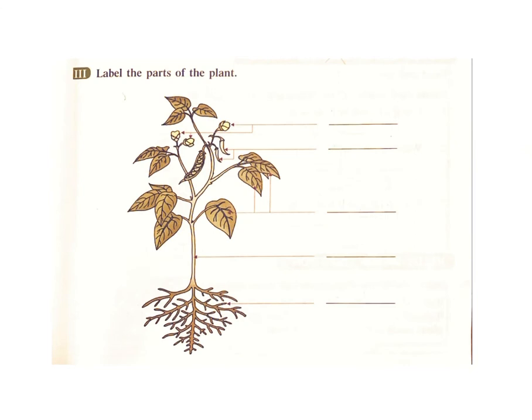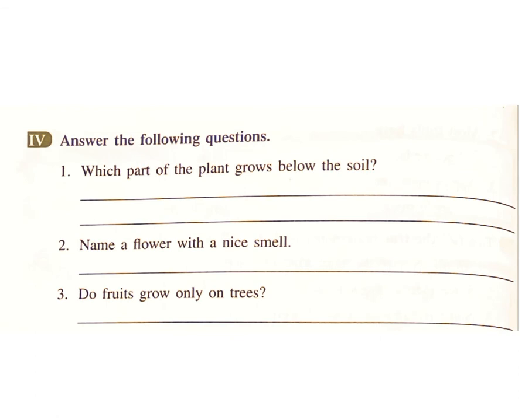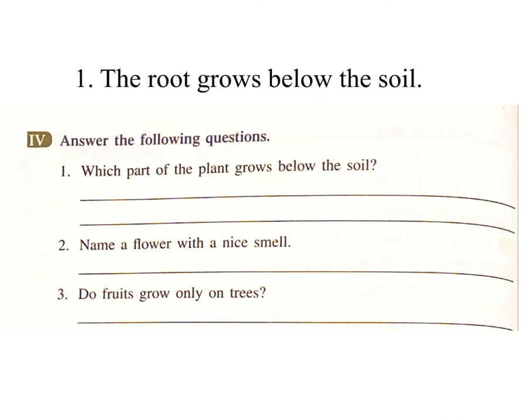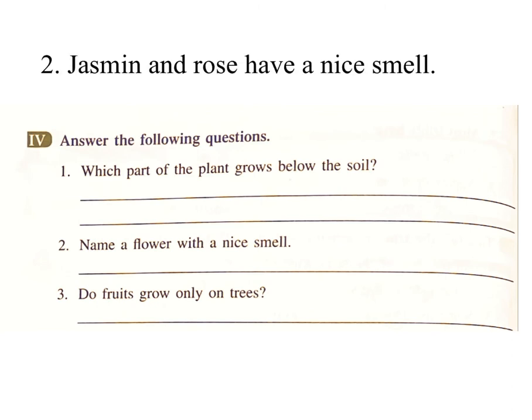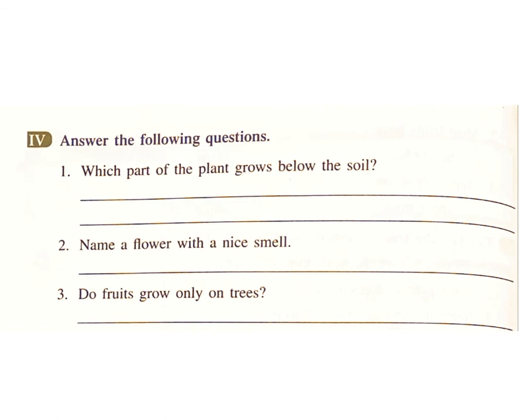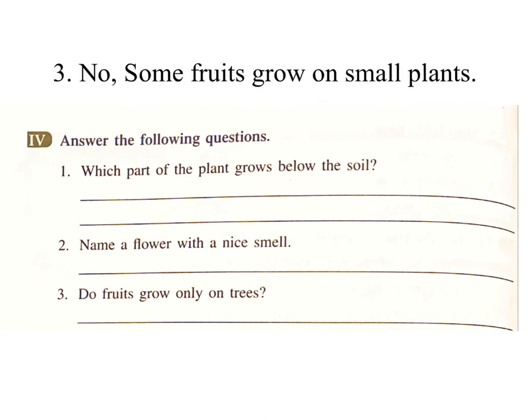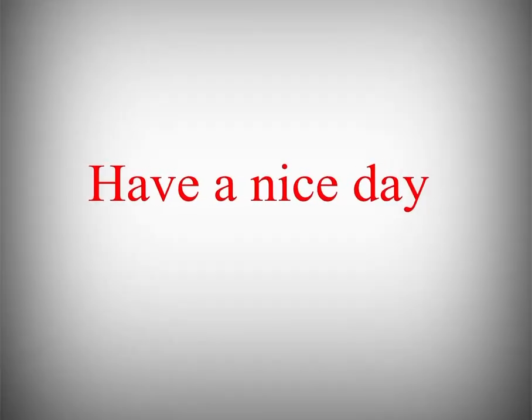Label the parts of the plant: flower, fruits, leaves, stem, root. Answer the following questions. One: Which part of the plant grows below the soil? Answer: The root grows below the soil. Two: Name a flower with a nice smell. Answer: Jasmine and rose have a nice smell. Three: Do fruits grow only on trees? Answer: No, some fruits grow on small plants.